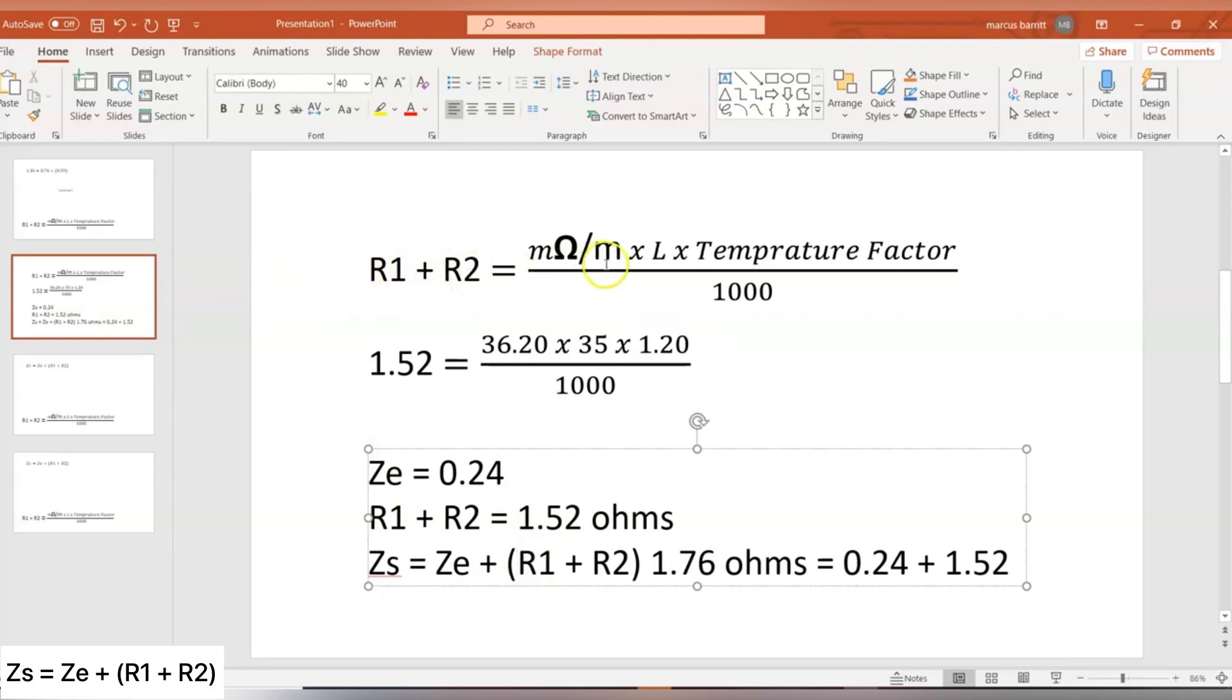So we calculate R1 and R2 by using this formula here, R1 plus R2 equals milliohm per metre, R1 being the line, R2 being the CPC, so the resistance of that total loop there, milliohms per metre, that's the amount of resistance in milliohms per metre of a copper or aluminium cable, and we can find that using appendix I of the on-site guide, we multiply that by the length, we then multiply that by the temperature factor, and then we divide that by a thousand, because we have milliohm there, so we need to divide it by a thousand to get the base number, that will give us our R1 plus R2, we then add our ZE plus our R1 and R2, which will give us our ZS, it's very important, we then check it complies within tables 41.2, 41.3 and 41.4, complies with the relevant circuit details of the maximum permissible fault loop impedance value.